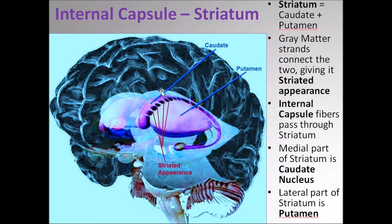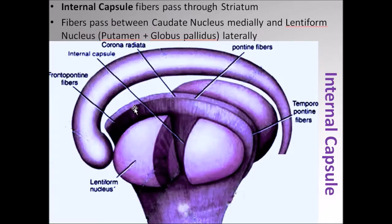As the internal capsule fibers are descending down, this picture shows how it splits the caudate nucleus from the putamen through these striated structures. This is the reason why these two structures together are referred to as the striatum. In simple terms, the word striatum refers to the caudate nucleus and putamen together, and this striated appearance is where the fibers of the internal capsule are descending down.